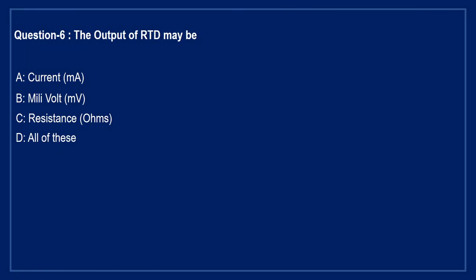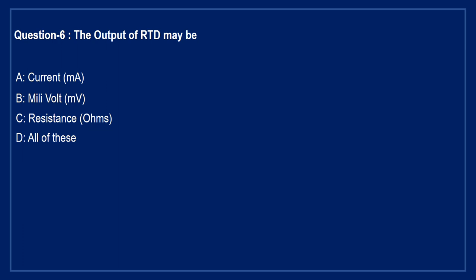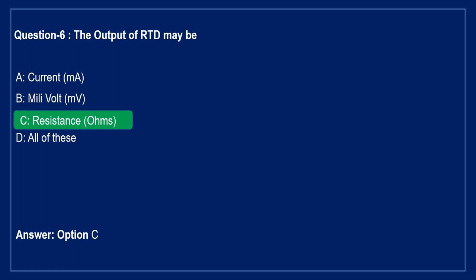The output of an RTD may be — Option A: current in milliampere. Option B: voltage in millivolt. Option C: resistance in ohms. Option D: all of these. The right answer is Option C, resistance in ohms.